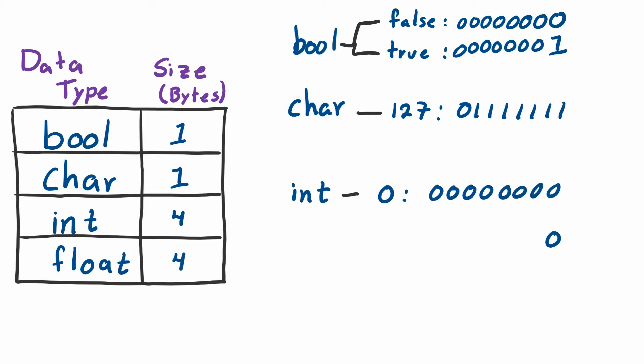Here we have eight, then another eight for another byte, then another eight for another byte, then the fourth byte. Now we have 32 zeros. This is how a zero looks as an integer which needs four bytes in binary.